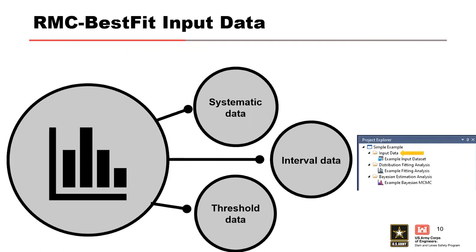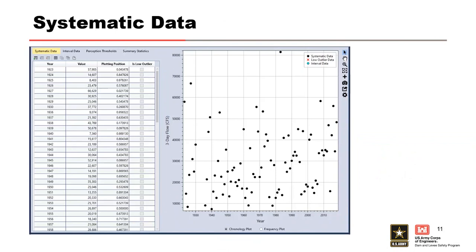We'll take a closer look at that input data. Systematic data is defined as exact data that is collected at a regular prescribed interval under a defined protocol. We assume this type of data has no uncertainty to it. An example of systematic data is observed flow from USGS gauges. This figure shows an example of systematic data set that's been entered into Best Fit.